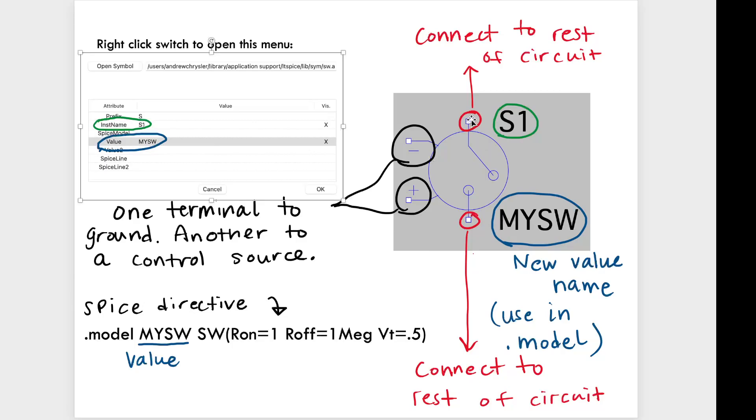The terminals here and here, these red ones, these ones connect to the rest of your circuit. The ones with the plus and the minus, these are going to connect to the voltage source, which we'll talk about later. And then somewhere on your schematic, you're going to need to have this SPICE directive.